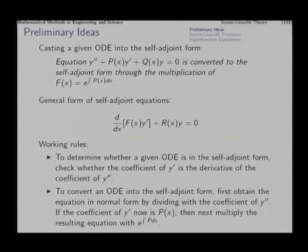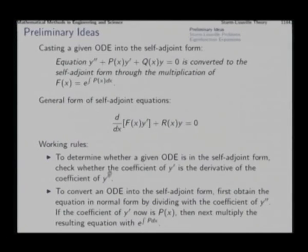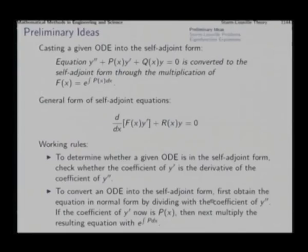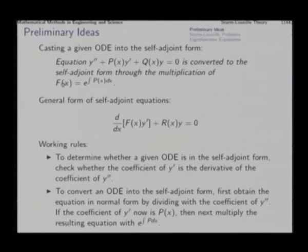There are two small working rules. First, to determine whether a given ODE is in self-adjoint form, simply check whether the coefficient of y prime is the exact derivative of the coefficient of y double prime. If not, and we want to convert to self-adjoint form, first convert to standard form by dividing throughout by the coefficient of y double prime, then multiply by the integrating factor e^(∫p dx).